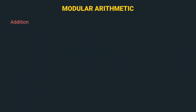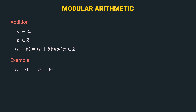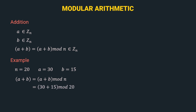Let's start with the addition operation. So, consider an integer a that belongs to Zn and another integer b that also belongs to Zn. So we want to perform an addition operation, then we have to apply the mod operator so that the output would also belong to Zn. Let's understand this using an example. So consider n as 20, a as 30, and b as 15, and we want to perform addition of a plus b. That is performed using the formula: a plus b equals (a plus b) mod n. That is equal to 30 plus 15 mod 20. Now 30 plus 15 is 45, so it becomes 45 mod 20 which is equal to 5. So this is how we perform addition operation in modular arithmetic.